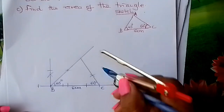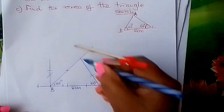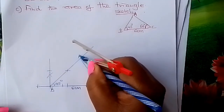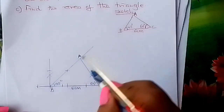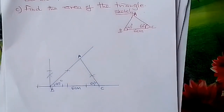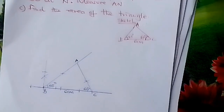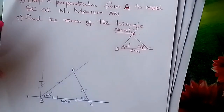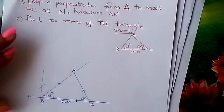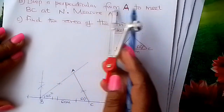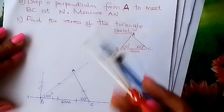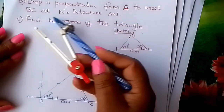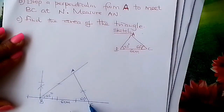Where the line from B at 45 degrees meets the line from C at 60 degrees, that is our point A. We now have triangle ABC. Moving to part B: drop a perpendicular from A to meet BC at N.